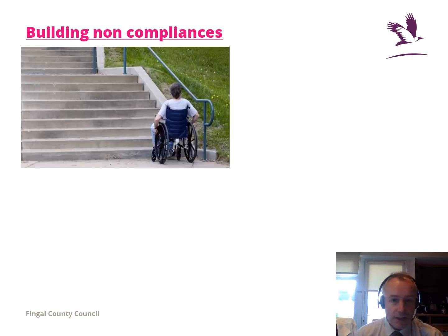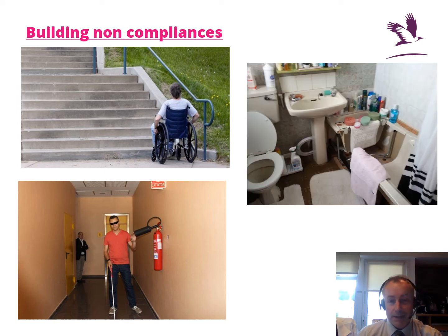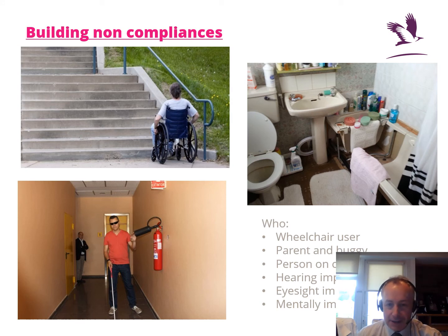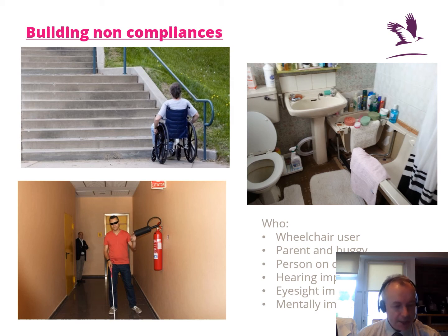Looking at building non-compliances — for example, where is the ramp? People with visual impairments sometimes need tactile guidance, and there are examples where that is completely absent. There is also an example here where the ingenuity is admirable, but it is not a compliant disabled shower. It's important to remember who is affected by Part M — not just wheelchair users, but also parents with buggies, people on crutches, people with hearing impairment, eyesight impairment, or cognitive impairment. These groups are often forgotten when consultants focus only on wheelchair users.